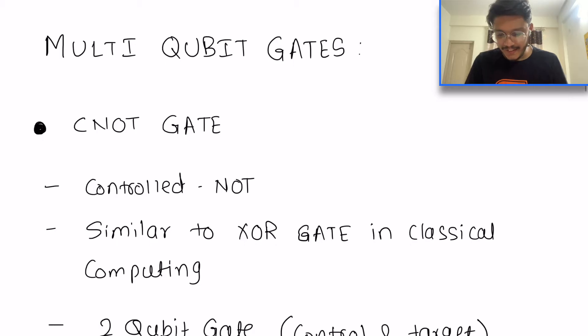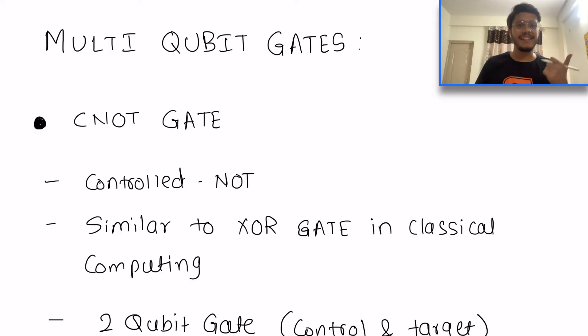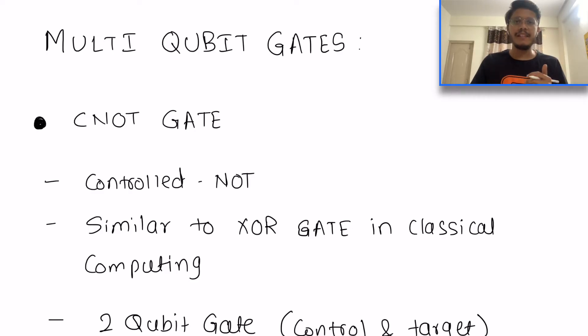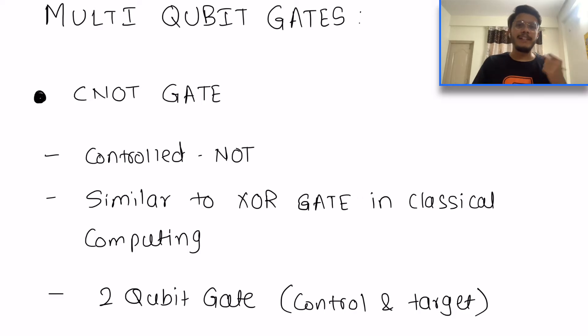The first gate in the multi-qubit list is the CNOT gate. You might have already seen this gate in the half-adder circuit, but today we are going in depth. CNOT stands for controlled NOT gate. The name defines that you can perform the opposite operation in a controlled manner on a particular qubit — that's why it's called the controlled NOT gate.